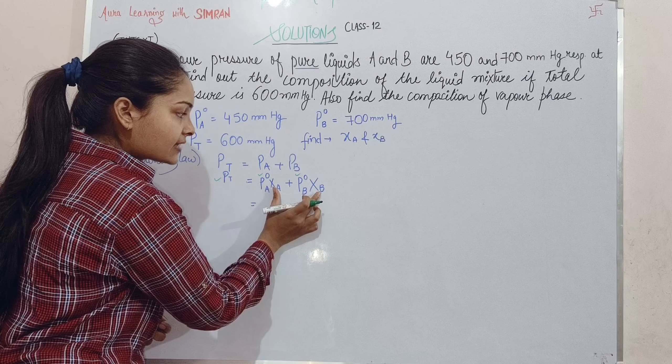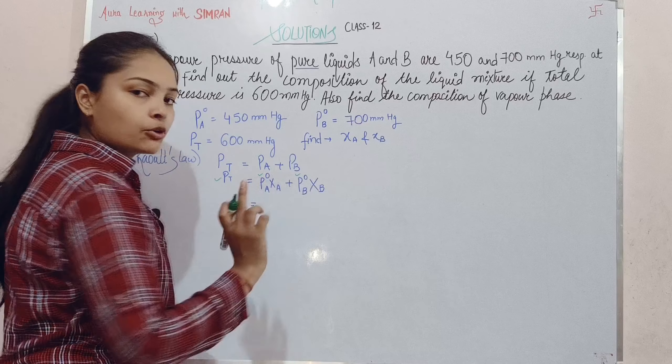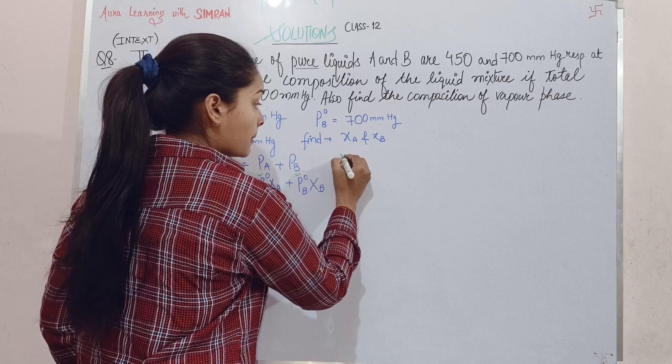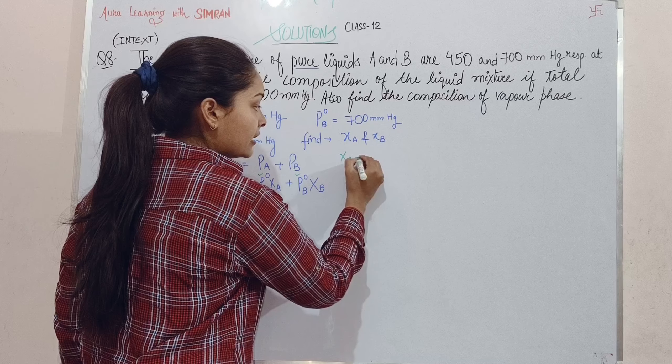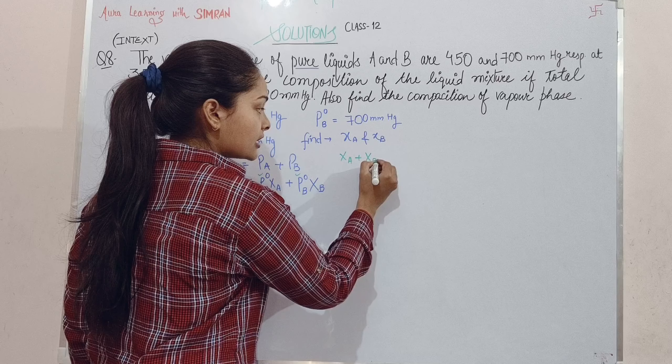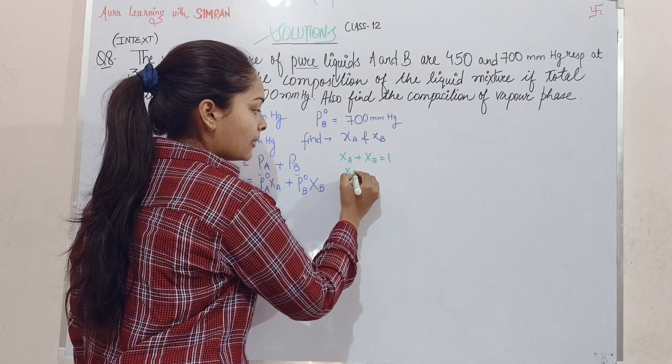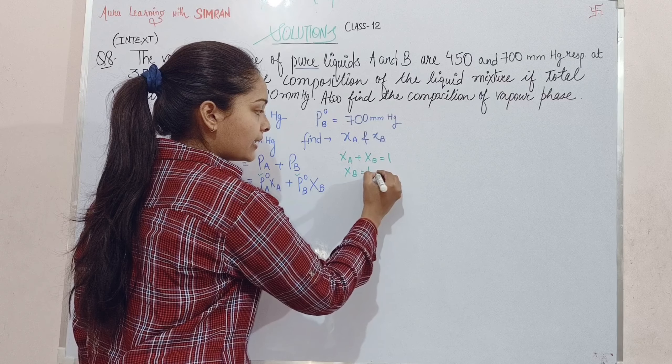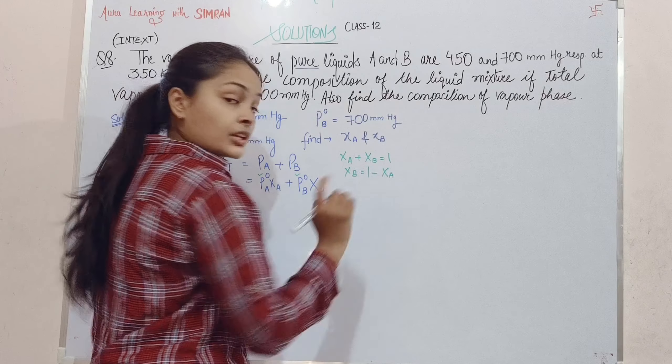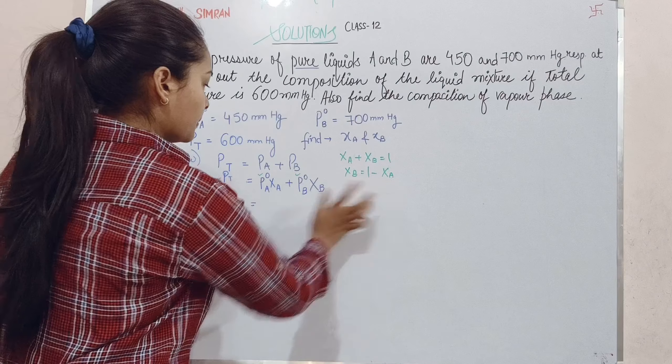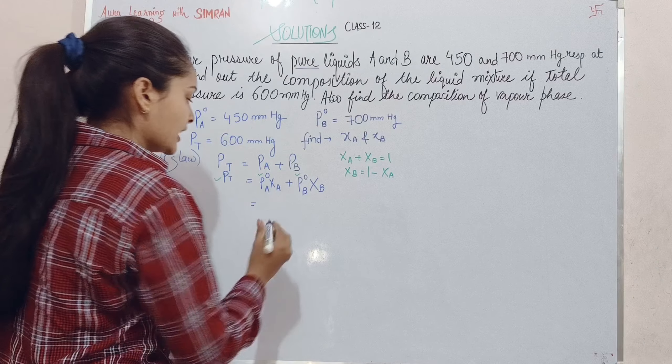I know the relation: χA plus χB equals 1. So χB is 1 minus χA. I substitute this in my equation.